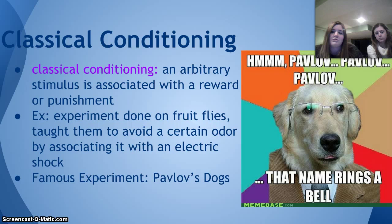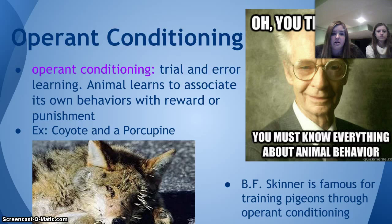Operant conditioning is trial and error learning, where animals learn to associate their own behaviors with a reward or punishment. For example, if a coyote approaches a porcupine and gets quills stuck in its face, it learns to avoid porcupines. A famous example is B.F. Skinner, who is famous for training pigeons through his Skinner boxes, which is also operant conditioning.